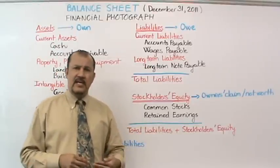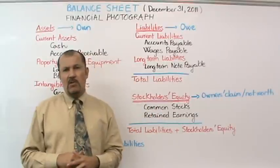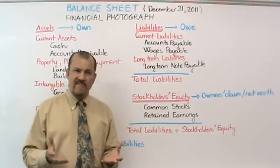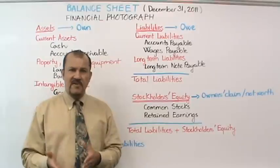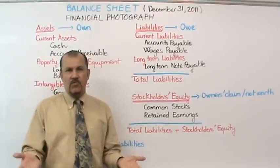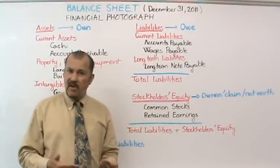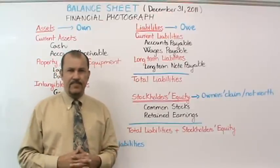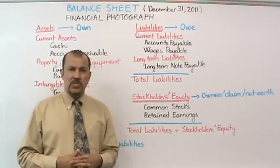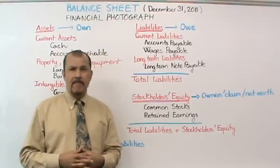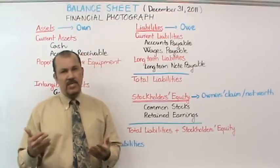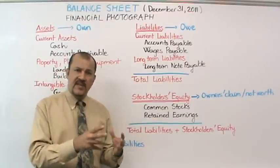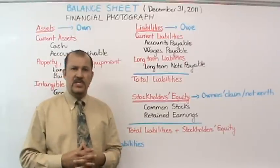Retained earnings is another account within the stockholders' equity family. The retained earnings account typically holds the company's profits. Every month as a company generates profits, those profits go into retained earnings, so the account keeps increasing. Conversely, every time the company has losses, retained earnings decreases. Another transaction that causes retained earnings to go down is the payment of dividends — a distribution of the company's profits to shareholders — which comes out of retained earnings.